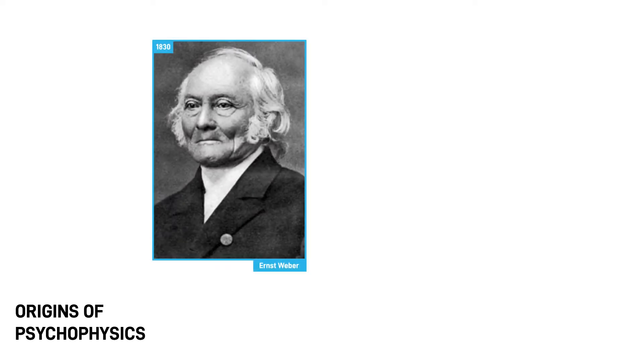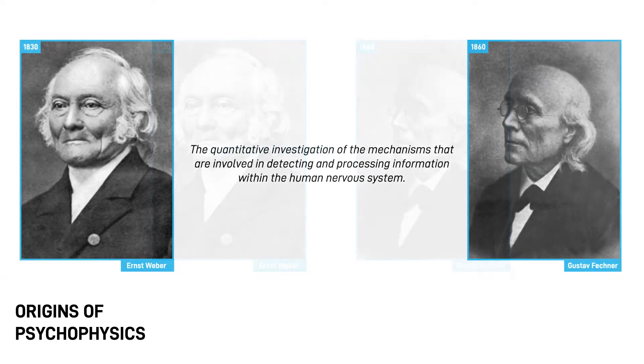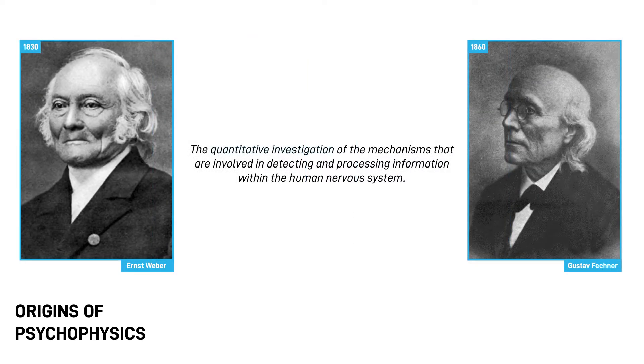To study human perception, researchers rely on a set of established procedures that are known as the psychophysical methods. The origins of psychophysics trace back to the 19th century, when Weber made the first experiments for quantifying the human perception of touch and light. Later, Gustav Fechner completed and extended Weber's work in his Elements of Psychophysics. In scientific literature, psychophysics refers to the quantitative investigation of mechanisms that are involved in detecting and processing information within the human nervous system.